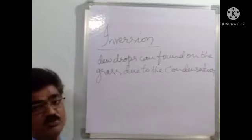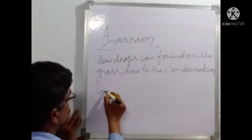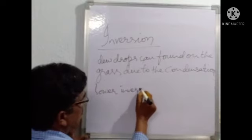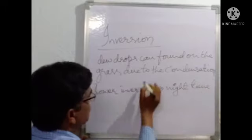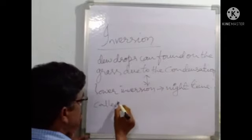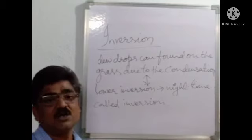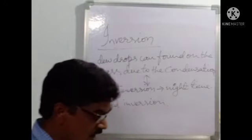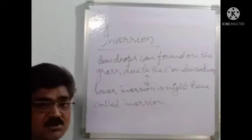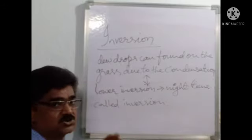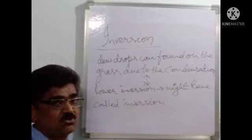Whenever excessive radiation takes place in the summer season, a lower inversion occurs — mainly in the nighttime, not in the daytime. The comparison between daytime and nighttime radiation is called inversion. Inversion takes place due to the interplay of day-and-night radiation and the solar insolation received from the sun. In winter the daytime is very short, while in summer the daytime is very long. This variation between seasons is what is referred to as inversion.